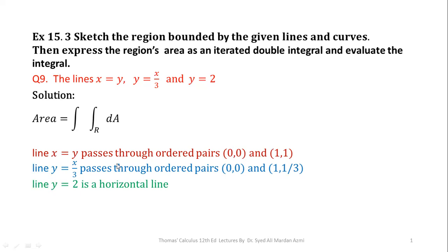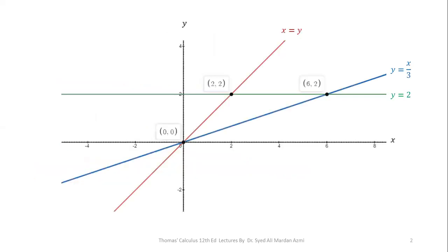In the next step, we will plot these lines. Please note that the x-axis and y-axis are not involved in our boundaries, so I have marked them as dotted lines. In this figure, the maroon line represents x = y, which passes through ordered pairs like (0,0), (1,1), (2,2), and so on.